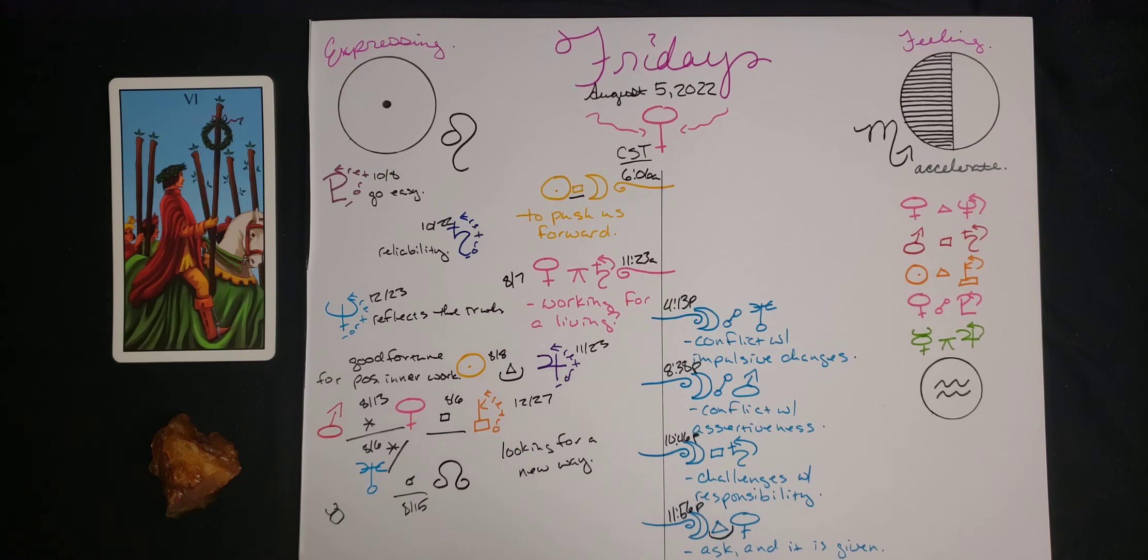Pluto is retrograde - go easy on yourself. We're all going through deep personal changes at this time that we might not even really understand or be able to describe, but you are working harder than you think you are. Saturn is retrograde right now. We're working on being reliable, being good resources for our community, good resources in our workplaces. Neptune is retrograde as well, and this reflects the truth. It just doesn't allow us to indulge in fantasies.